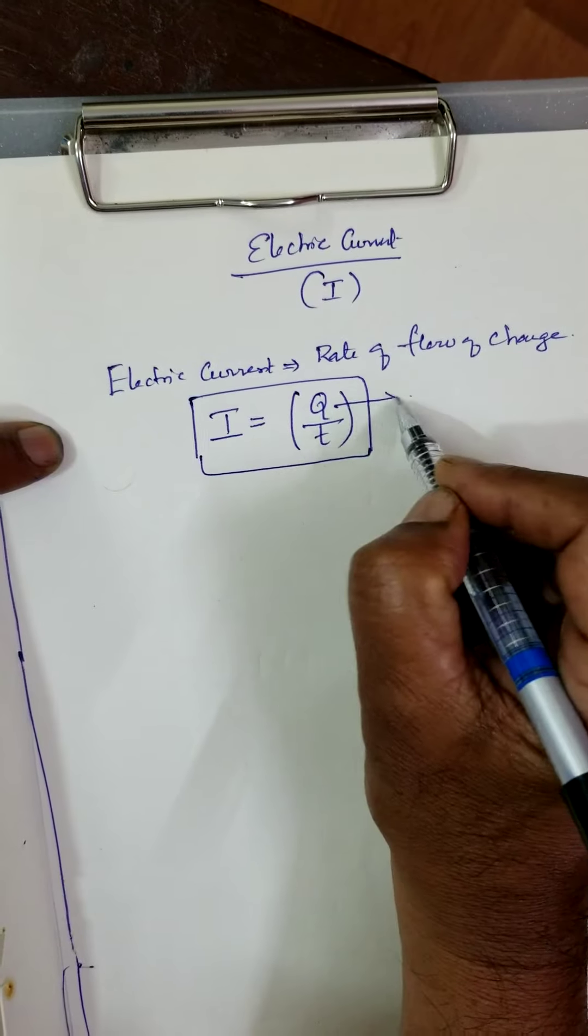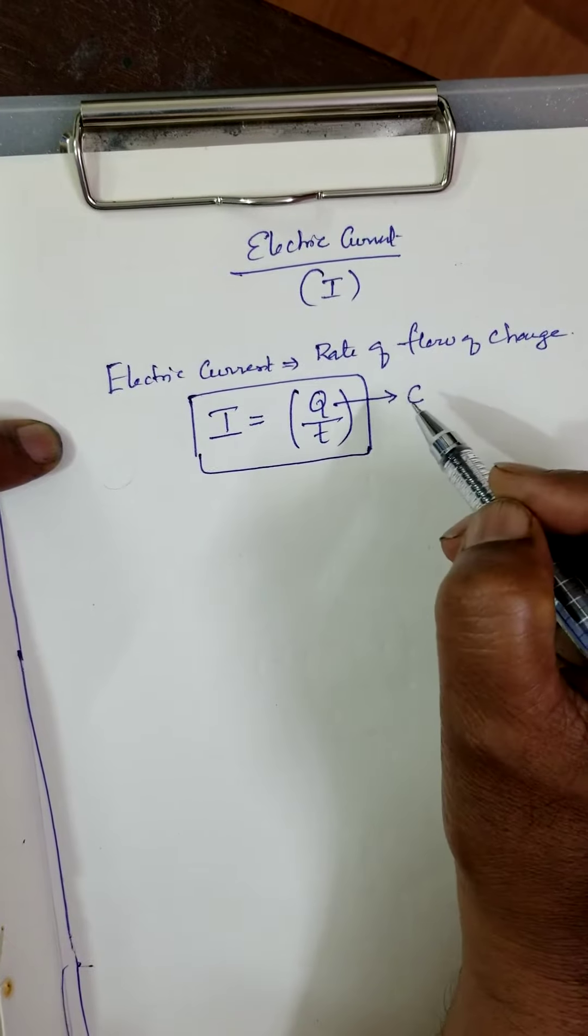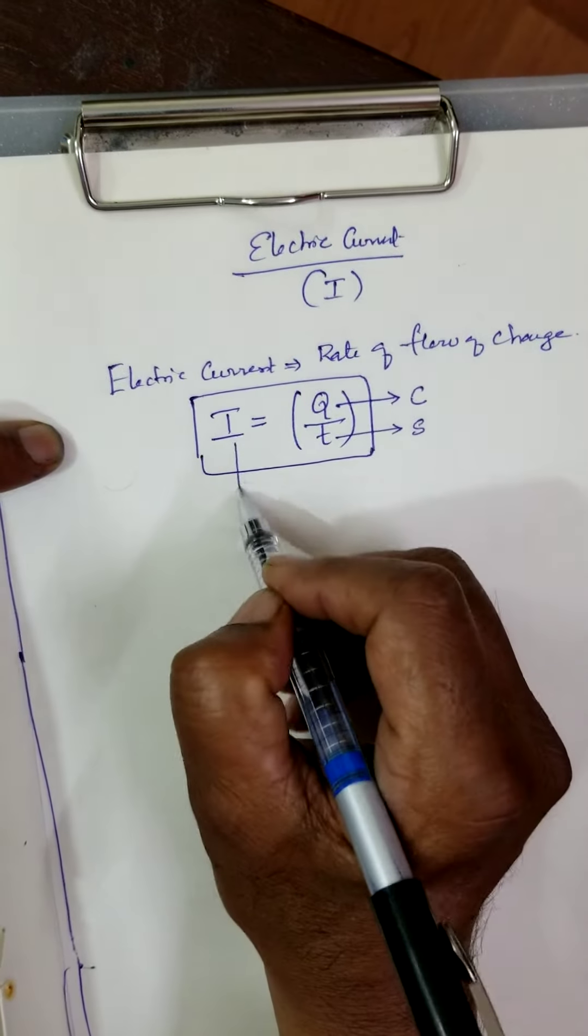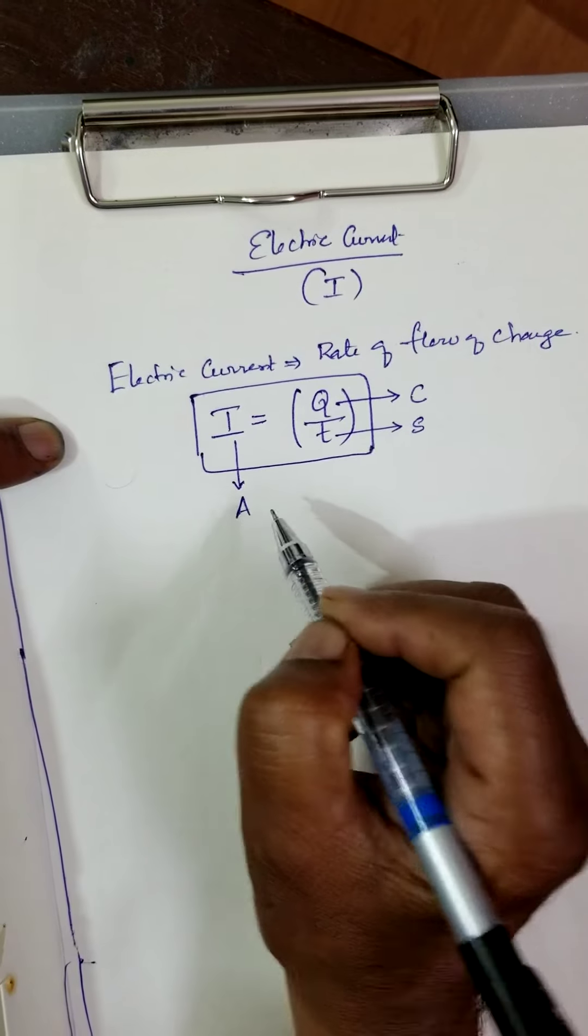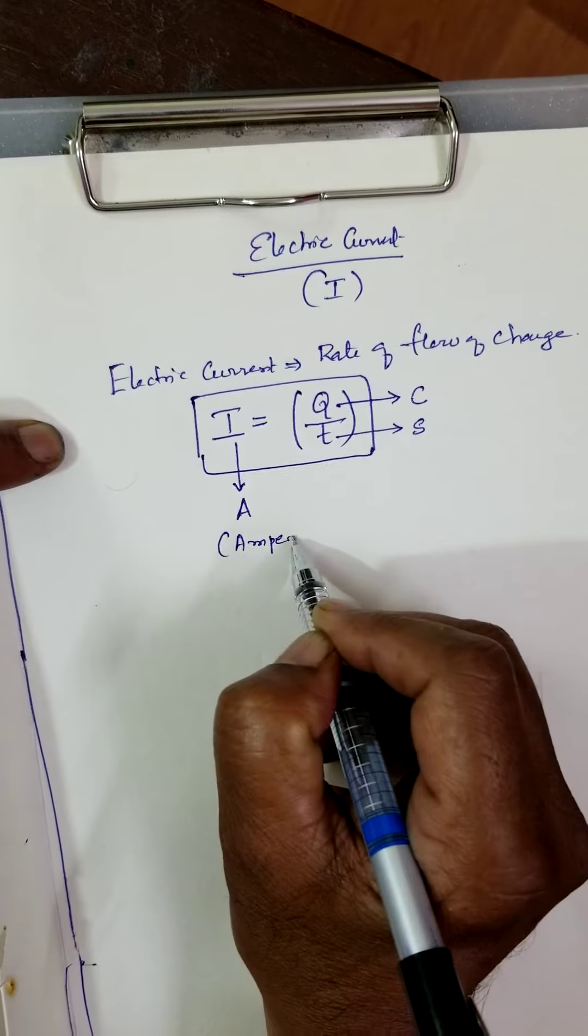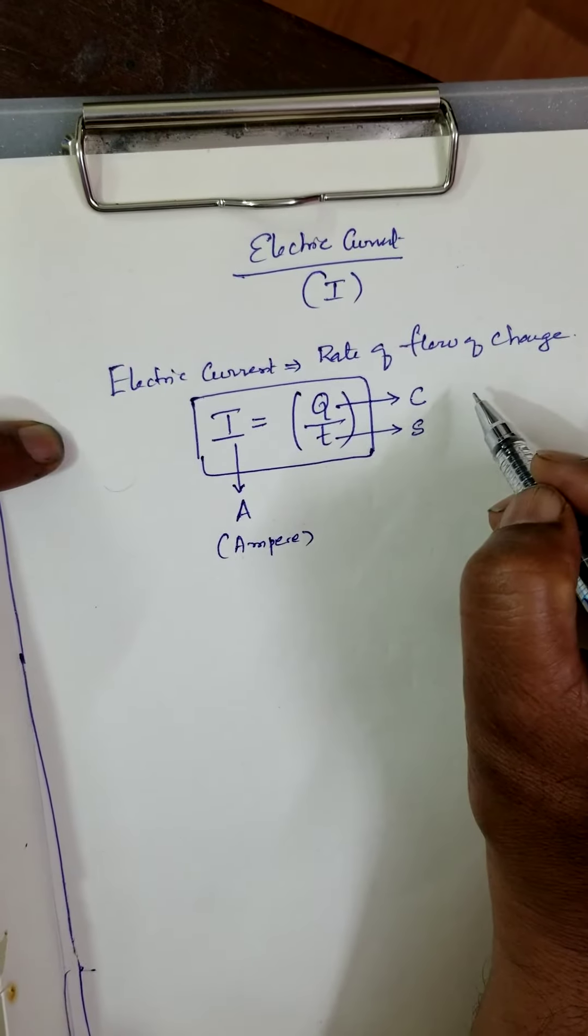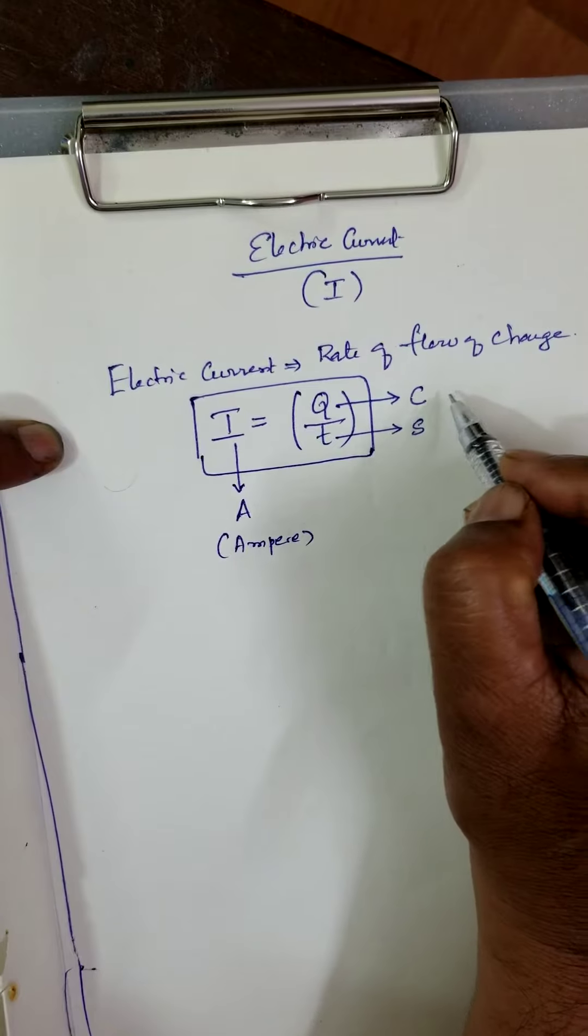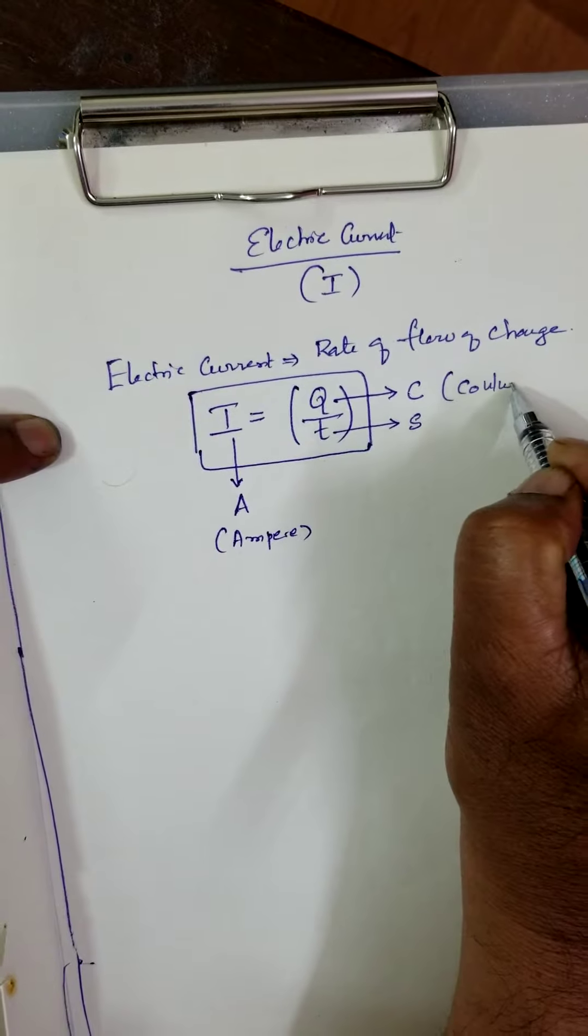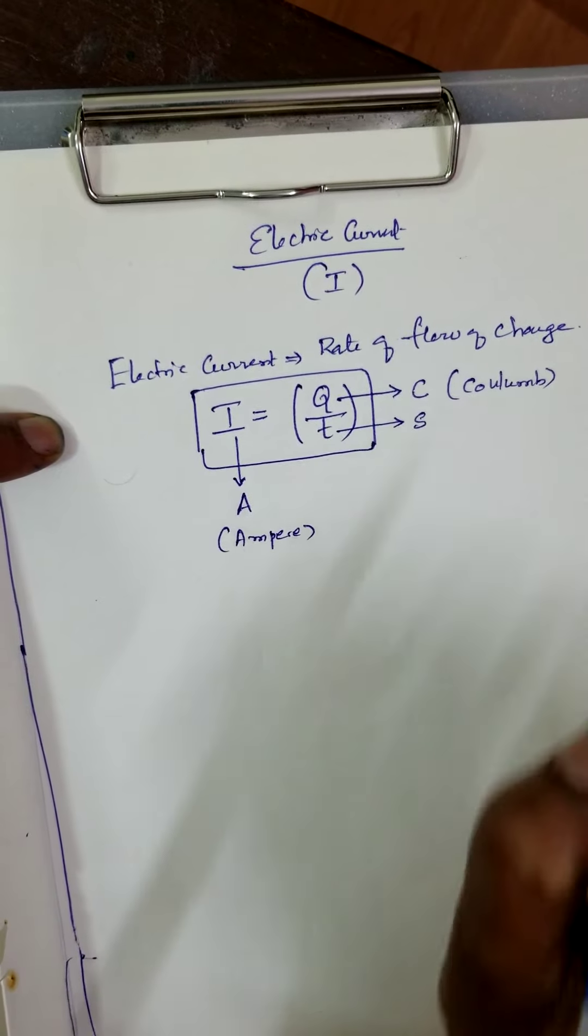Now unit of charge is Coulomb. Unit of time is second. Unit of current is called Ampere. That is spelling A-M-P-E-R-E. Ampere. And C-O-U-L-U-M, Coulomb. And second you know.